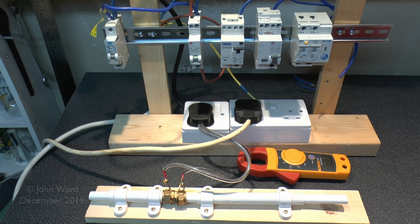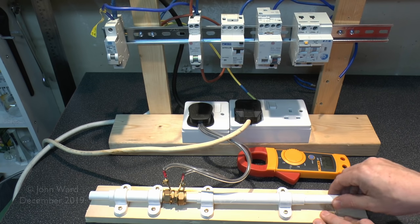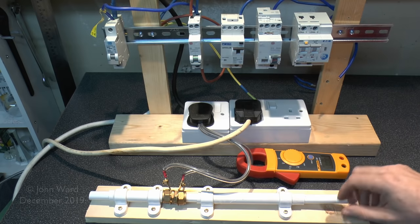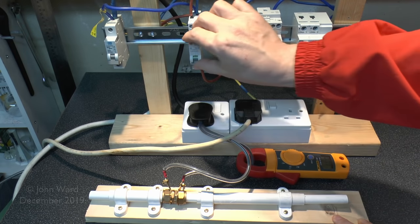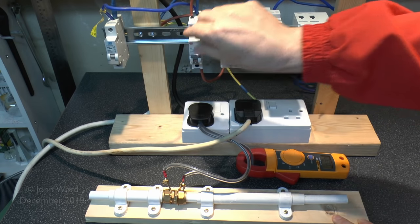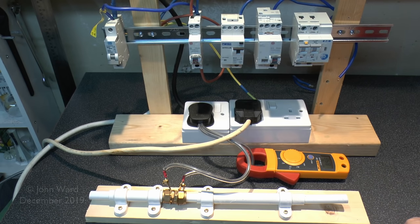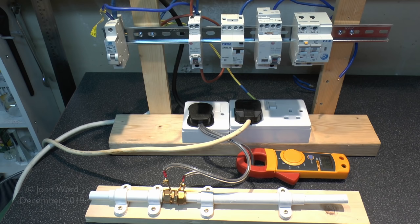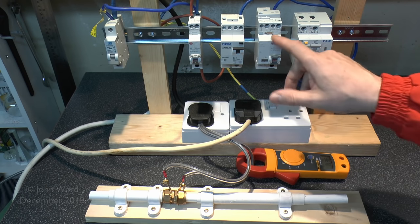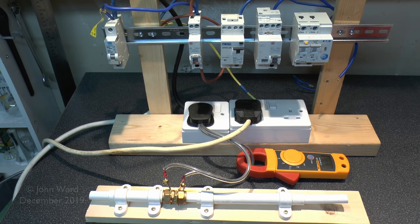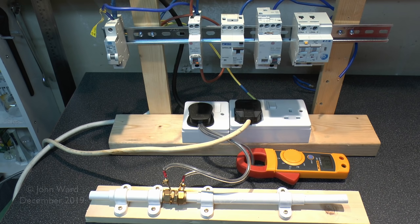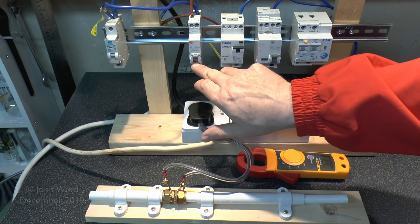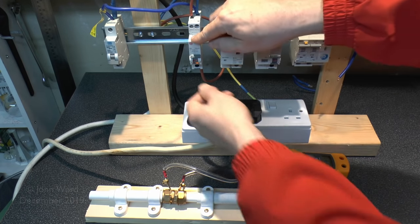OK, so there we go, so that did eventually trip there, but anyway that was at considerable overload, about 8A there on a 6A device, so again, rather different results than we had from the others there, and again if we turn on we should see the LED indication should be a different colour. So see that's just flashing amber there, and one at a time, and as we saw with this one that's the series or parallel arc that's been detected.